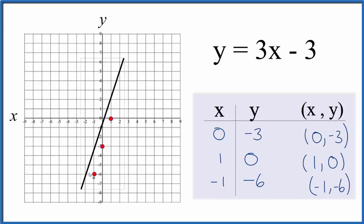You can see those points line up. We could just put a line right through them, put some arrows on the end to show it goes to infinity. This is the graph for y = 3x - 3.